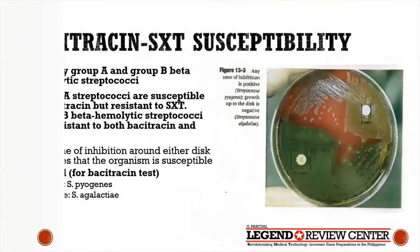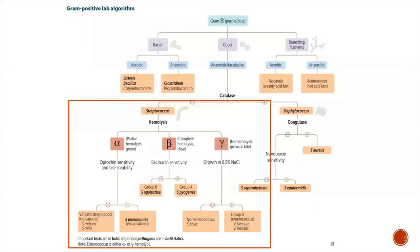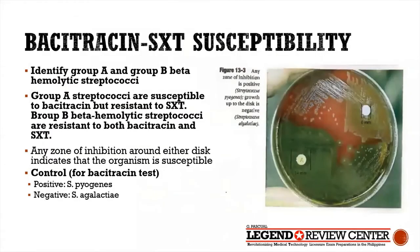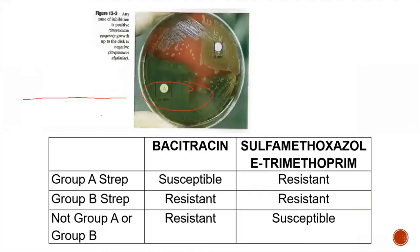For beta-hemolytic, catalase-negative gram-positive cocci, the first test to differentiate Group A and Group B is the bacitracin/SXT susceptibility test. Group A strep, or Strep pyogenes, is susceptible to bacitracin but resistant to SXT, whereas Group B is resistant to both bacitracin and SXT.